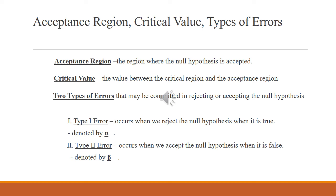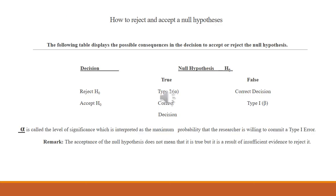There are two types of errors in accepting or rejecting the null hypothesis. Type 1 error, denoted by alpha, occurs when we reject the null hypothesis when it is actually true. Type 2 error, denoted by beta, occurs when we accept the null hypothesis when it is actually false. Alpha is called the level of significance, interpreted as the maximum probability that the researcher is willing to commit a Type 1 error.